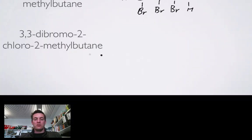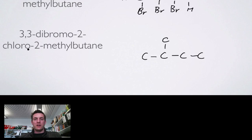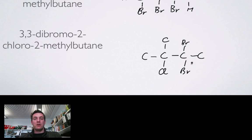This next example is also based on 2-methylbutane, so we start with the same skeleton — four carbons with one branch on the second carbon. This time we have not only bromine atoms but also chlorine atoms. There's only one chloro, on the second carbon. There are two bromine atoms both on the third carbon, because the name says 3,3-dibromo. All remaining positions are filled with hydrogens. That is how we name alkanes that have halogens in them.